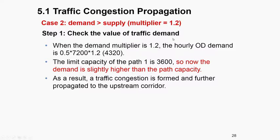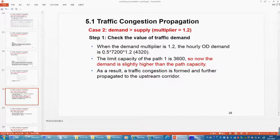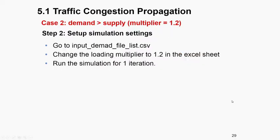Let's take a break and then go to the demand multiplier equals 1.2. Welcome back — we are going to go through case 2 and case 3 by increasing the demand multiplier from 1.2 to 1.3. In this exercise, with demand multiplier 1.2, the only OD demand is 0.5 times 7,200 times 1.2, which equals 4,320. The limited capacity of path 1 is 3,600 vehicles per hour. So now the demand is slightly higher than the path capacity.